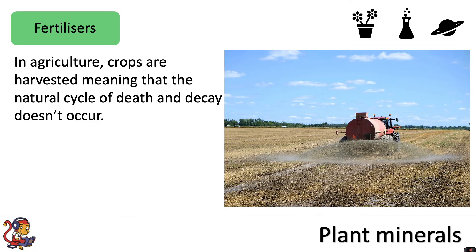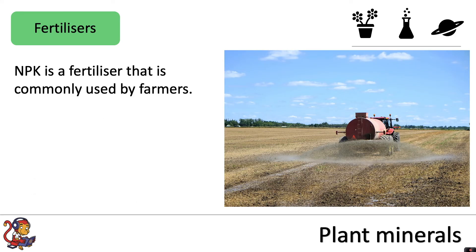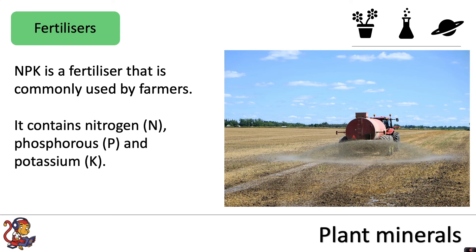In agriculture, crops are harvested, meaning that the natural cycle of death and decay doesn't occur. Therefore, farmers spray their soil with chemicals called fertilizers to replace the minerals in the soil. NPK is a fertilizer that is commonly used by farmers. It contains nitrogen, which is the N, phosphorus, which is the P, and potassium, which is the K.